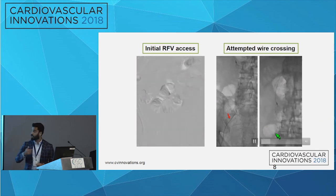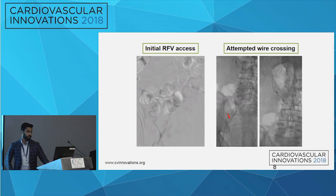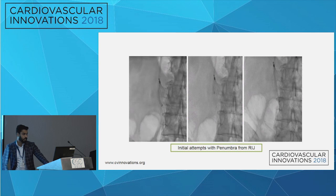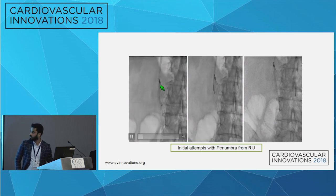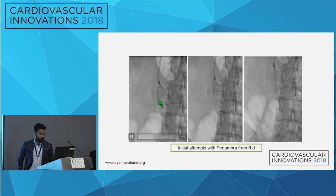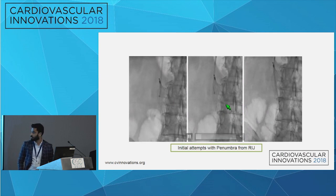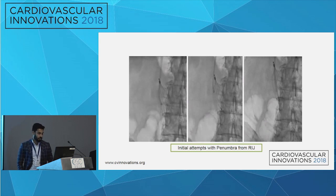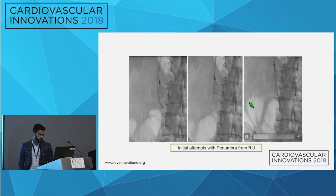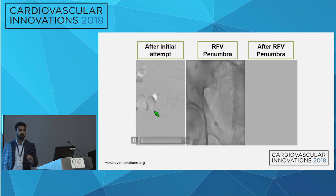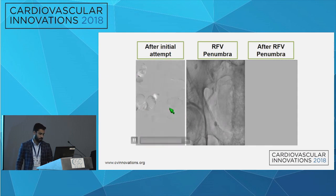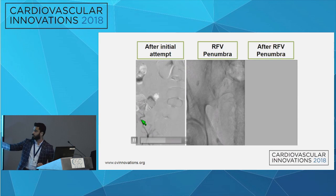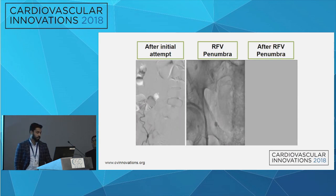We decided to go after it with the Penumbra device. The benefits of the Penumbra — as discussed earlier — is that the large French system allows us to take out more clot. This is the first video using the Penumbra device, showing the separator wire that helps break off the clot to get more suction. Unfortunately, after the initial attempt with Penumbra through the IJ, you can see that there's really not much difference — still extensive clot burden remaining.